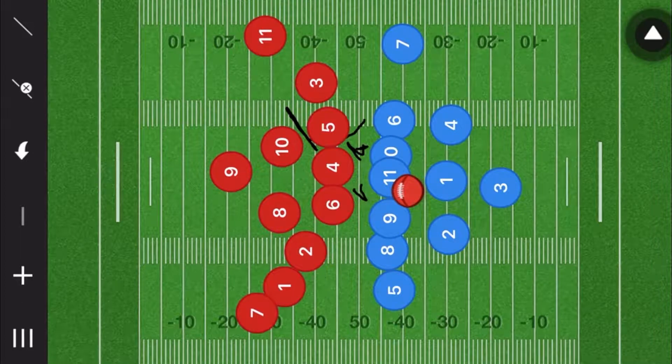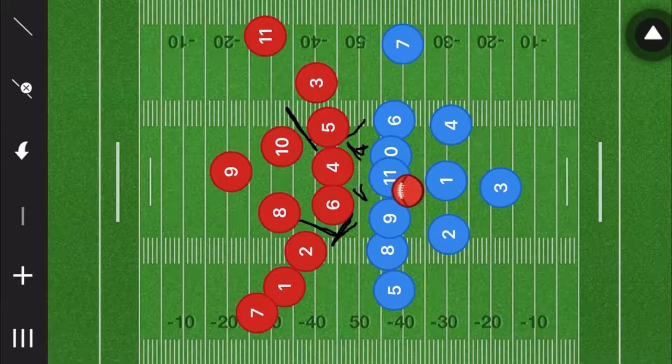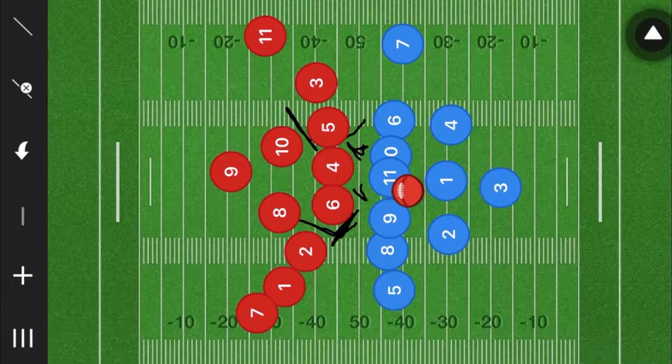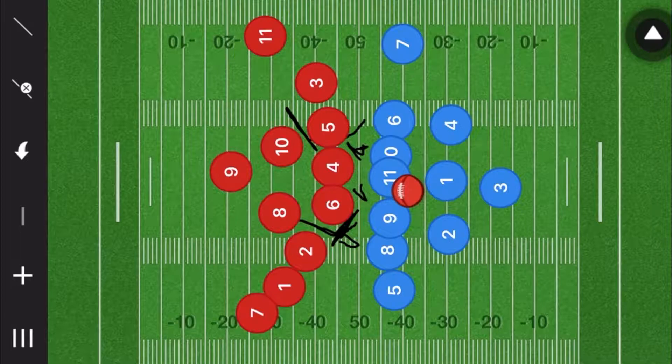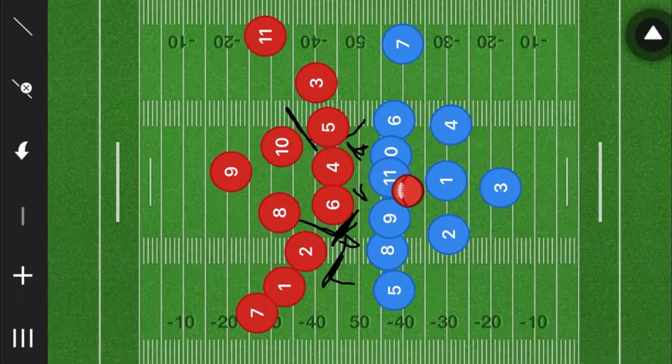Then what we're going to have is player nine blocking up here, most likely player eight if he tries to run this way. Then we're going to have the tight end blocking right there.